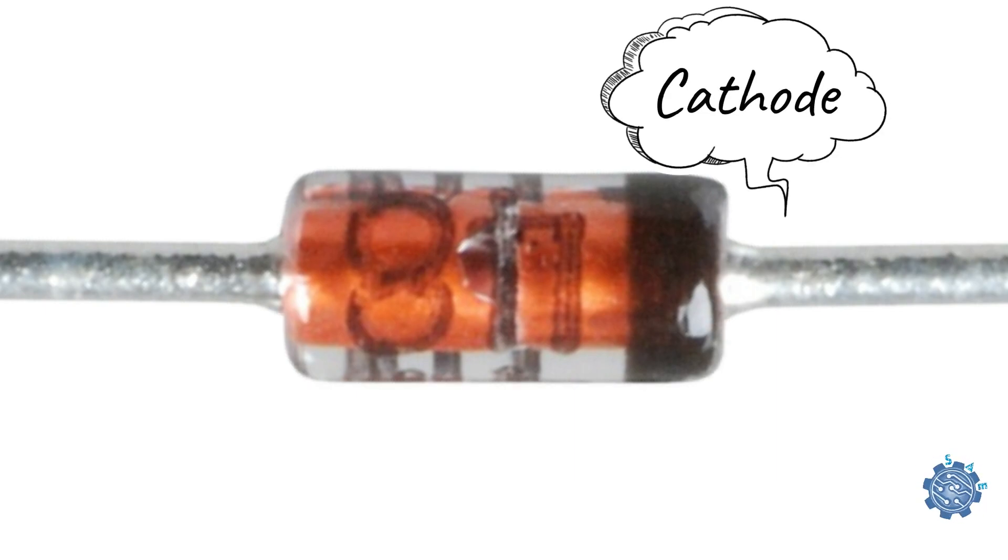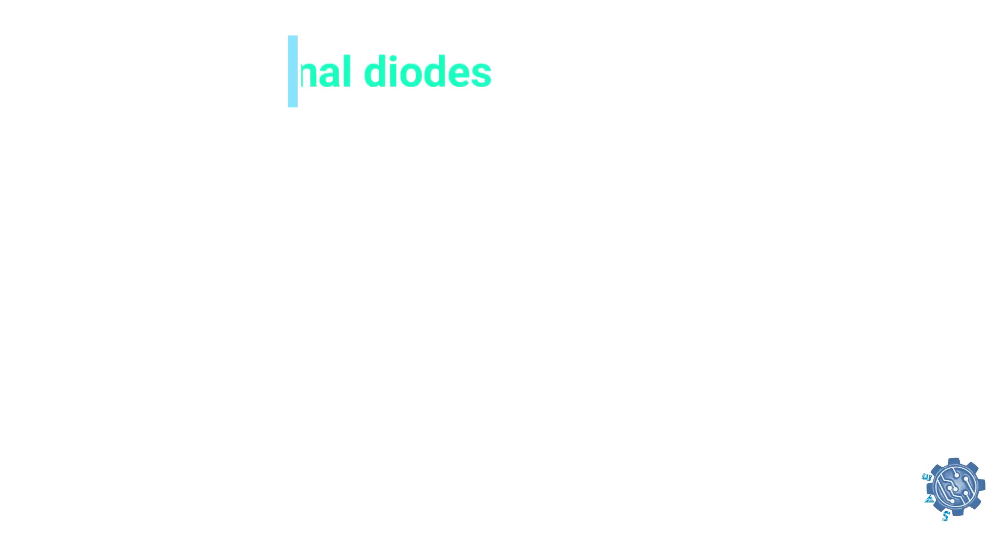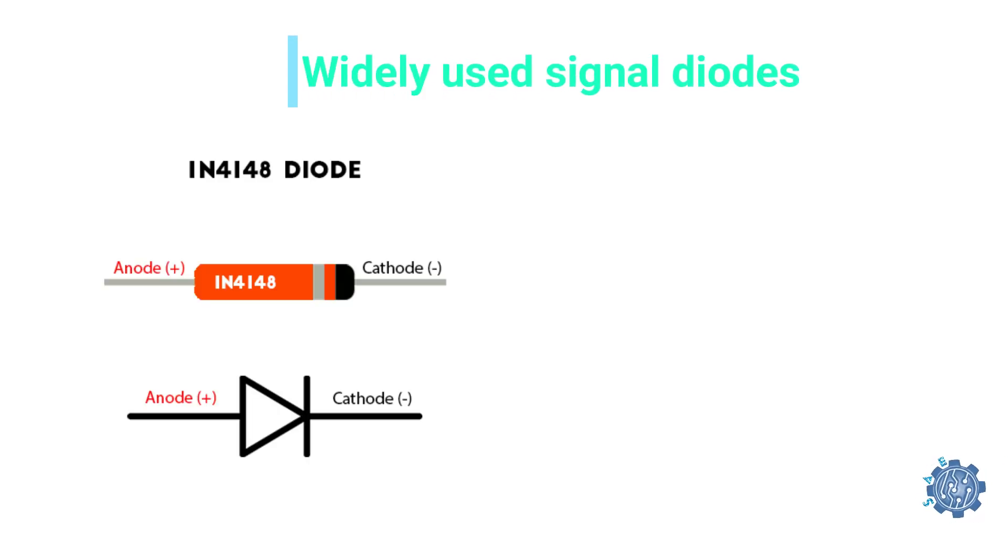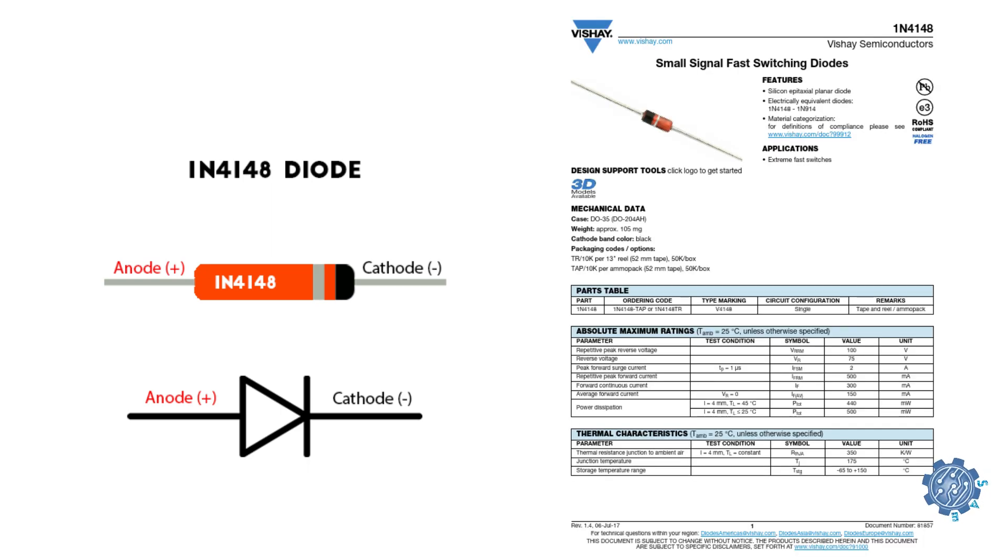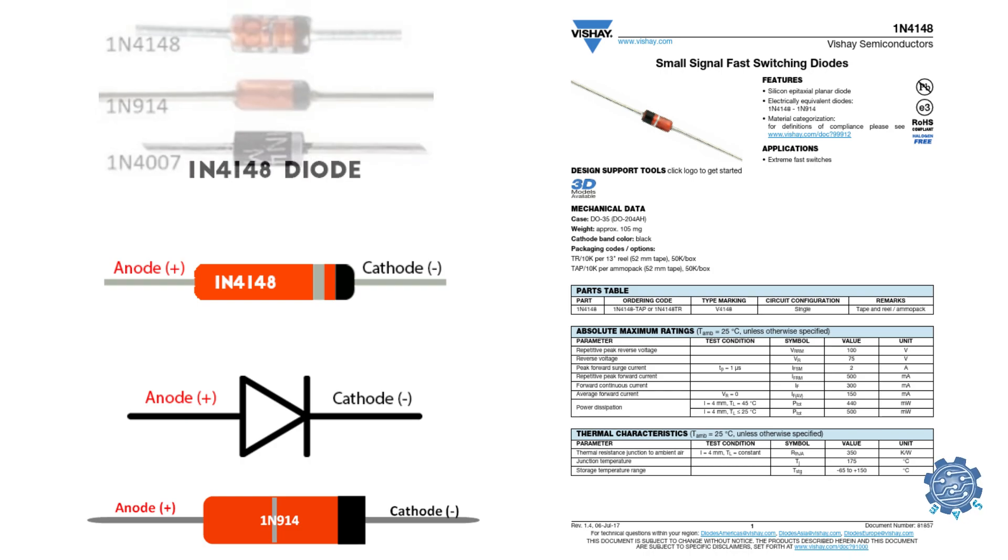The most widely used of all glass encapsulated signal diodes is the very common 1N4148 and its equivalent 1N914 signal diode.